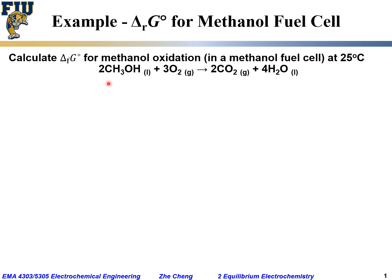Let's check the mass and charge balance. Two carbons on the left, two carbons on the right. Three plus one gives four hydrogens — actually eight hydrogens on the left (four times two), and eight hydrogens on the right (four times two). Two plus six gives eight oxygens on the left, and four plus four gives eight oxygens on the right. Mass is balanced. Zero charge on the left, zero charge on the right, so charge is also balanced.